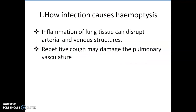Now I talk about how infection causes Haemoptysis. Due to infection, inflammation occurs in the lung tissue. Inflammation of lung tissue can disrupt arterial and venous structures. Also, repetitive cough due to infection may damage the pulmonary vasculature.